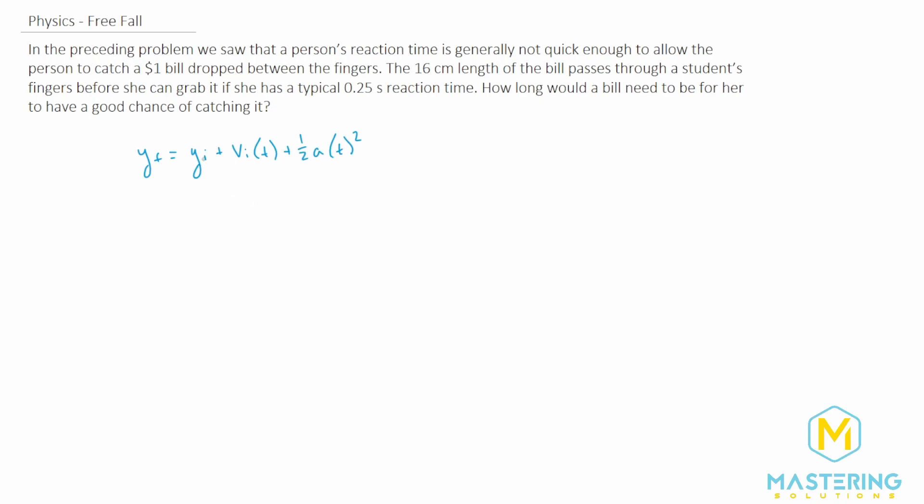So in this we said just like in the last problem the y initial is going to be zero. We're setting that as the starting spot and so the bill will be dropping in the negative y direction. So the initial velocity is also zero.